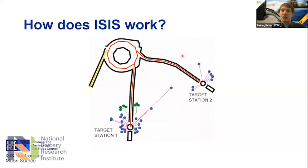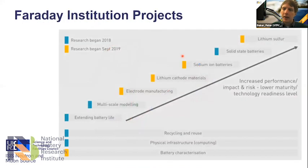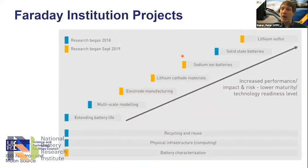ISIS uses neutrons and muons to look at where atoms are in materials and what those atoms are doing. For muon studies of battery materials, it's really about what the atoms are doing. My other role is as a co-investigator on the Faraday Institution's FutureCat project.